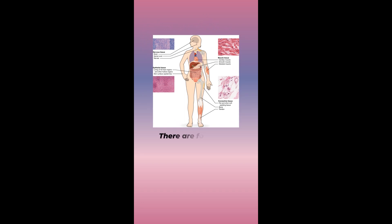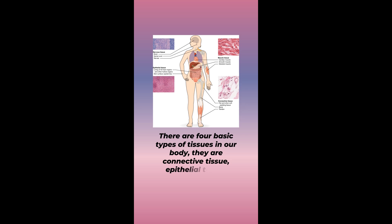There are four basic types of tissues in our body. They are connective tissue, epithelial tissue, muscle tissue, and nervous tissue.